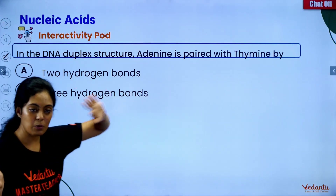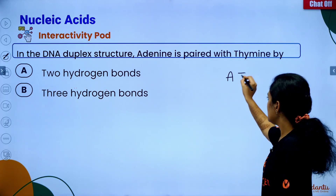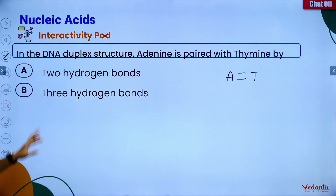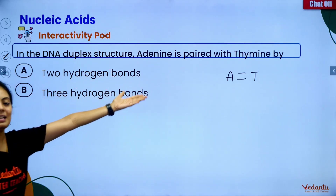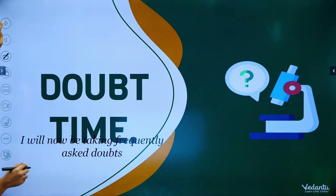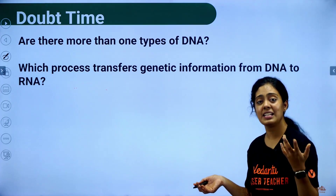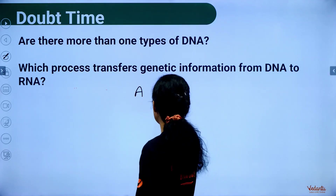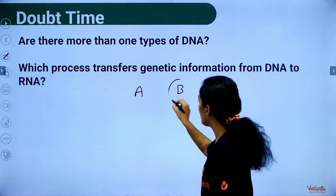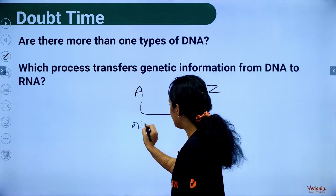Practice question: In a DNA duplex structure, adenine is paired with thymine by how many hydrogen bonds? The answer is option A — 2 hydrogen bonds. There are also different types of DNA: A-DNA, B-DNA, and Z-DNA. The most prominent form is B-DNA. A-DNA and B-DNA are right-handed helices; Z-DNA is left-handed.